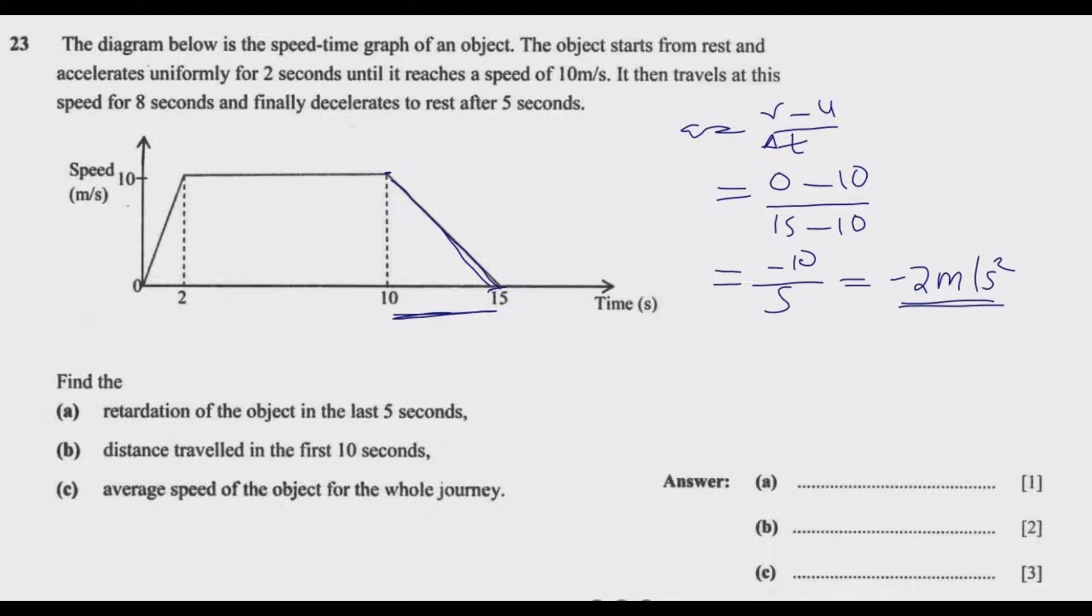Because we are asked to find the retardation, this means 2 meters per second squared. Once you put negative 2 meters per second squared, it implies deceleration or retardation. If you put positive 2 meters per second squared, it means acceleration. Remember to take care of that common mistake.